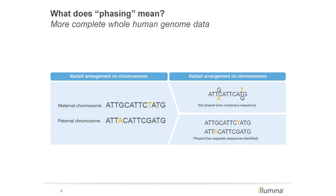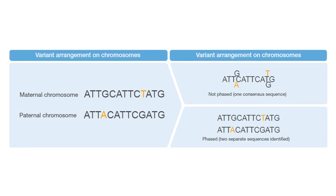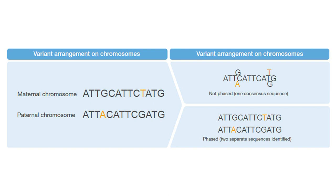Phasing refers to the separation of a consensus sequence into individual sequence strands to identify which variants occur together, or in phase. In this diagram, we show a homologous segment from two haploid chromosomes shown on the left, one originating from the maternal chromosome and the other from the paternal chromosome. If this gene segment was sequenced using only short read data, the output sequence would be unphased and represented as a consensus sequence, shown on the top right.